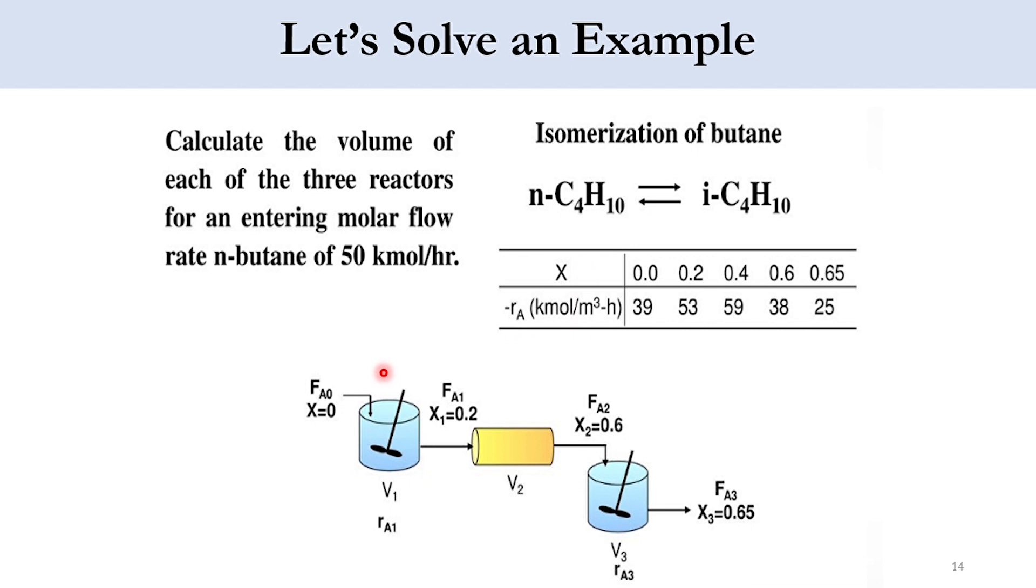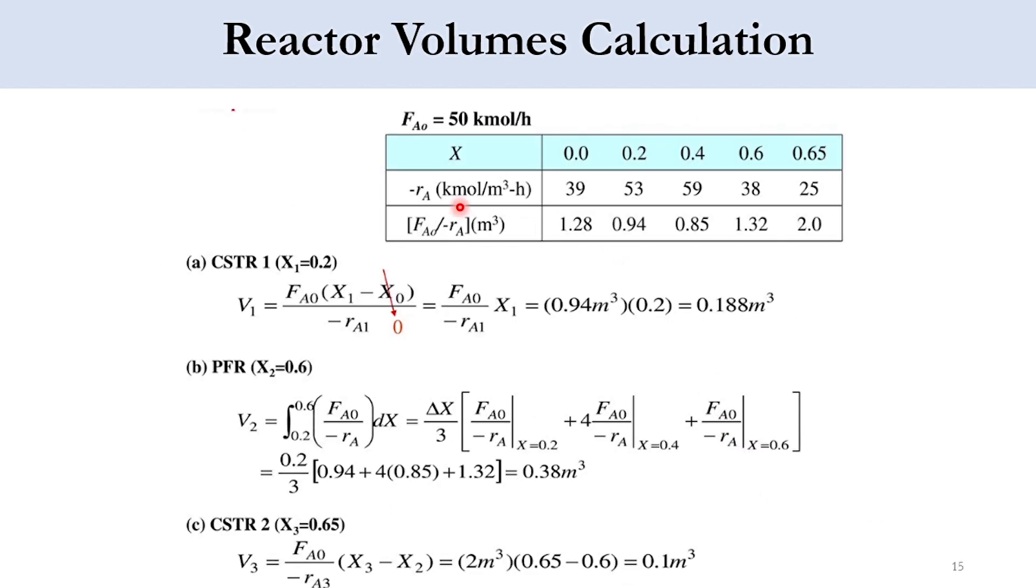If you see this diagram, there are three reactors in the system: two are CSTR (first and third) and the second one is PFR. FA0 is entering the CSTR. The CSTR has volume V1 and the rate of reaction is designated as RA1. In first reactor we get conversion of 20%, by the end of second reactor we get an overall conversion of 60%, by the end of third reactor we get an overall conversion of 65%.